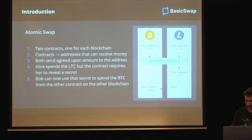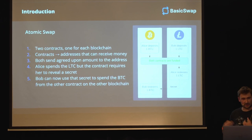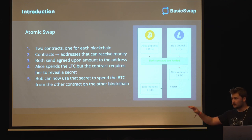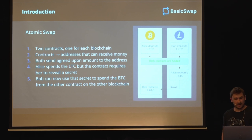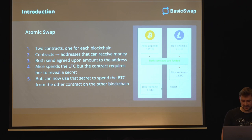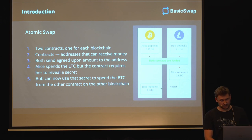Now here's the magic of an atomic swap. This is key to remember: when Alice redeems her Litecoin, when she completes her end of the swap, she reveals a secret. And this secret is a condition inside a contract. So the contract says you need to reveal a secret before you can take out the money. And when she does reveal that secret, Bob can also take that secret because it's publicly available and then use it on his side to redeem the Bitcoin. So there's going to be a secret that only one of the two people know, and when one person takes it out, it will reveal a secret to the other person.